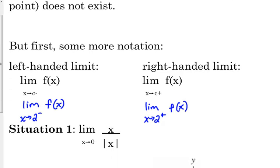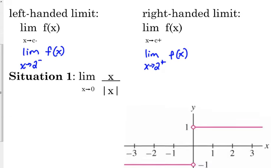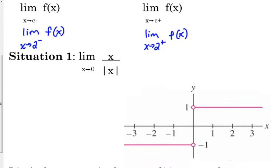Let's look at situation number one. Here is an example where the limit as we approach zero of this kind of weird function, x over the absolute value of x — this limit does not exist. We're going to talk about why here in a second. Here is the graph of the function x over the absolute value of x.